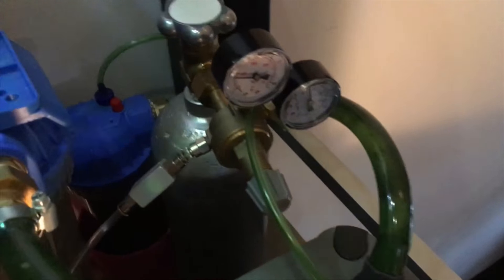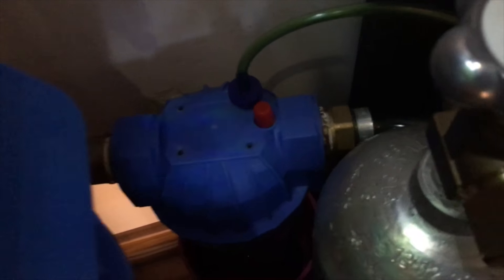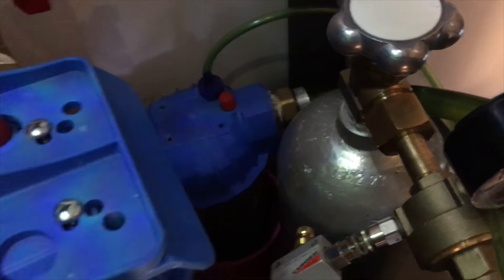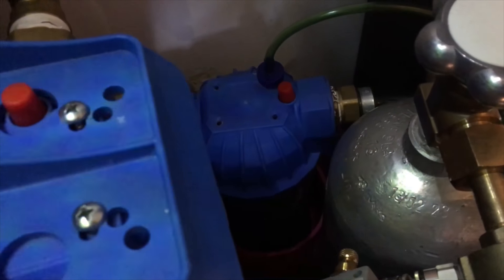Następnie woda trafia do drugiego filtra rurowego. No niestety tego już Wam dokładnie nie pokażę, o co chodzi, ale jest tam kawałek wężyka i upchany trochę gąbek.